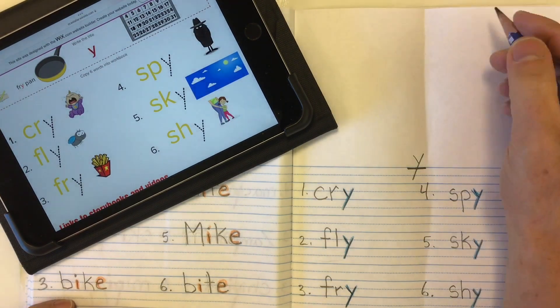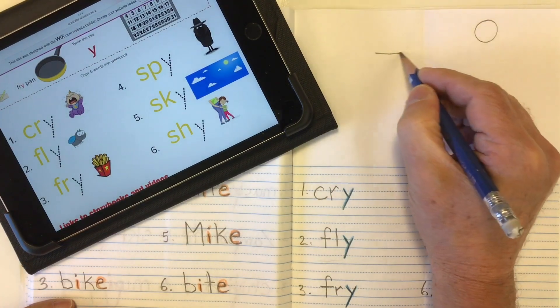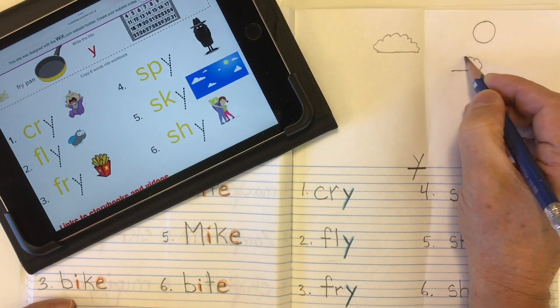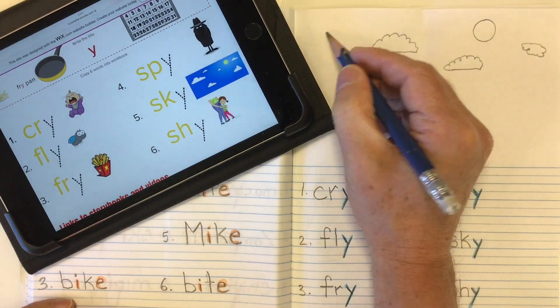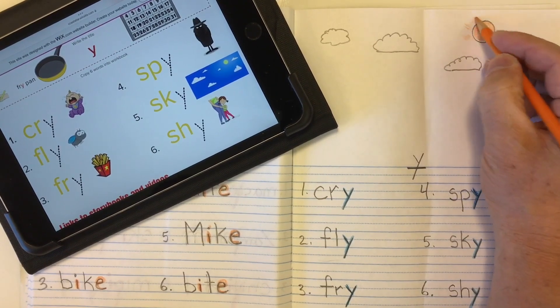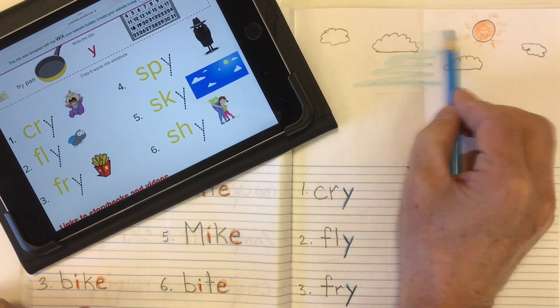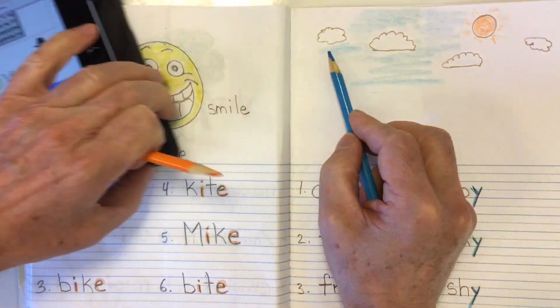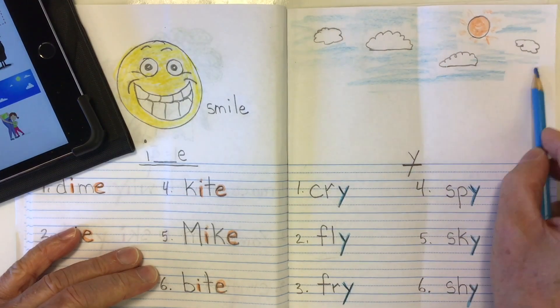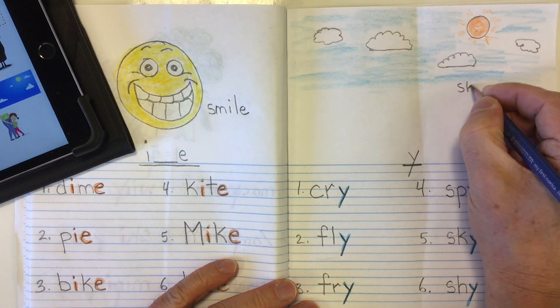Well, for a picture, I think what I might do is maybe a picture of a sky. So if I put the sun there, and some clouds. There we go, and I can label my picture, sky.